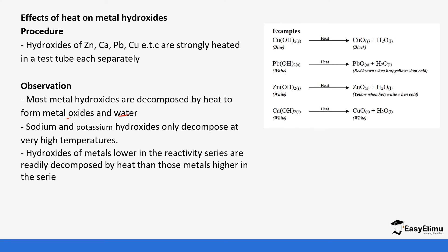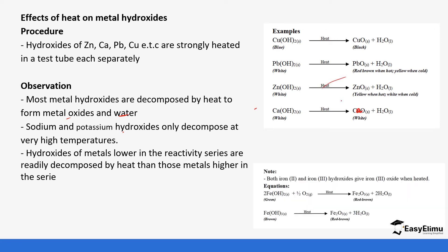When you heat copper hydroxide you form black copper oxide. Lead hydroxide forms lead oxide, which is red when hot and yellow when cold. Zinc hydroxide forms zinc oxide, which is yellow when hot and white when cold. Calcium hydroxide forms calcium oxide, which is white. For iron(II) and iron(III) hydroxides, they usually both give iron(III) oxide. It is important to remember this especially in theoretical analysis.